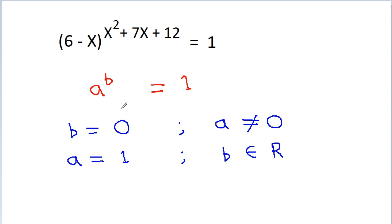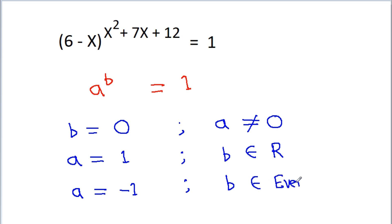There is also a third solution — pause the video and think about it. The third solution is: if a = -1 and b belongs to any even number, then (-1) to the power of an even number is equal to 1. So there are three solutions of a^b = 1.